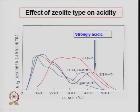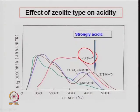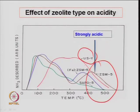Depending upon the type of zeolite, the acidity will change. Ultra-stable Y-type zeolite, iron-ZSM-5 (H-ZSM-5 with iron), silicoaluminophosphate SAPO — which are weaker type acids — and ZSM-5 which is stronger. Different types of zeolite material show different peaks, which represent the concentration of the acid sites at higher temperatures.